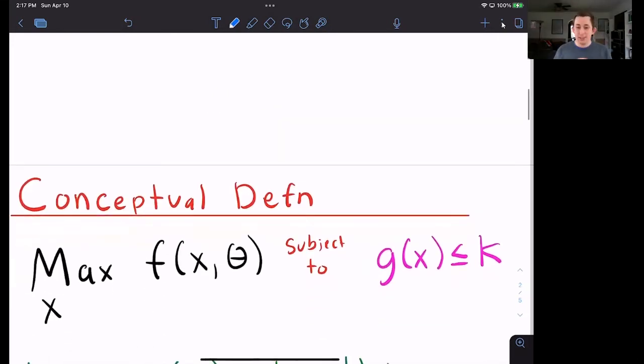Here is a basic maximization problem that you might encounter. So we're maxing, we've got a choice variable x. We also have a parameter of the problem theta. So if you're thinking back to maybe a lifetime utility maximization problem, this could be your beta or your time discount factor, but we're going to make it more general and just call it theta.